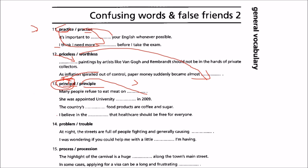Principal ends in P-A-L. Problem and trouble: at night the streets are full of people fighting and generally causing trouble. Trouble is caused. Small aspects or minor things cause trouble. I was wondering if you could help me with a little problem — small aspects are also used here for problem.